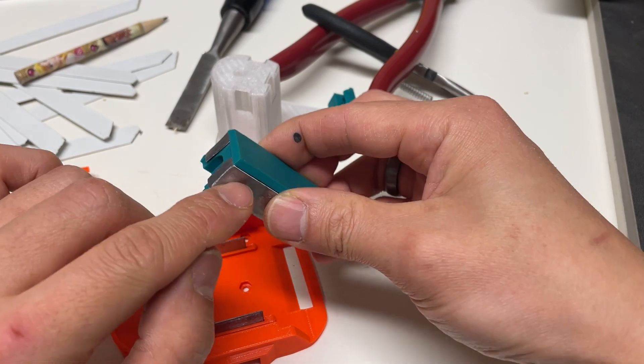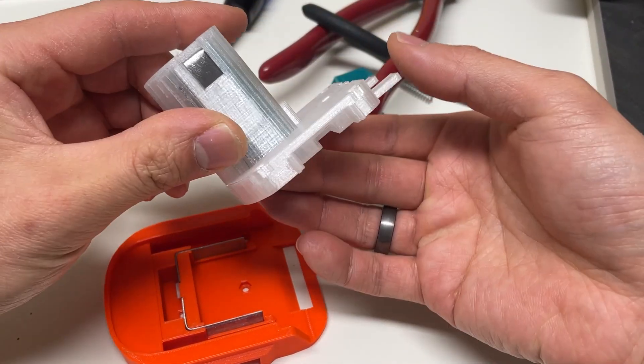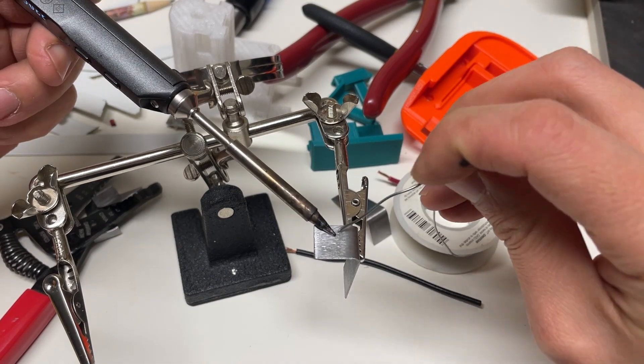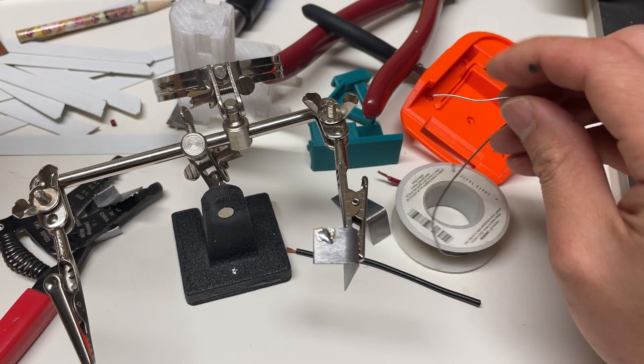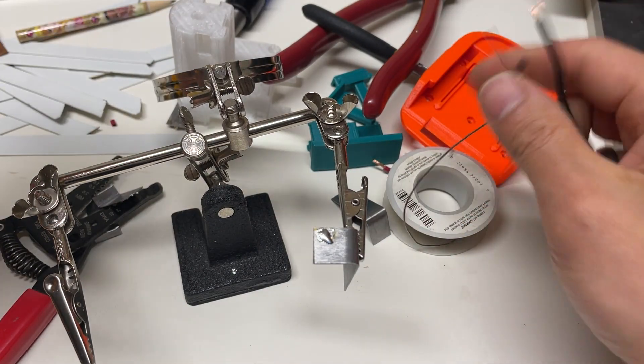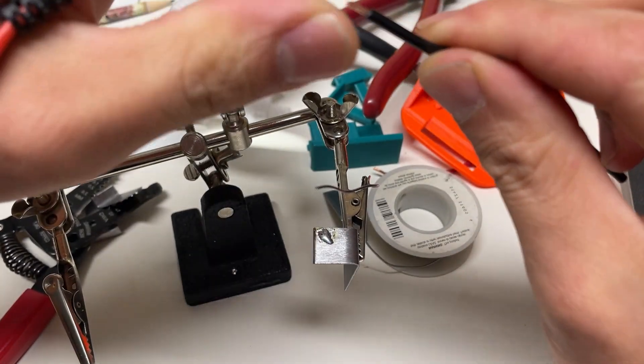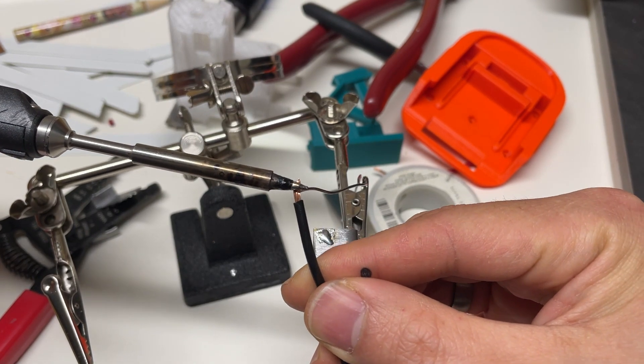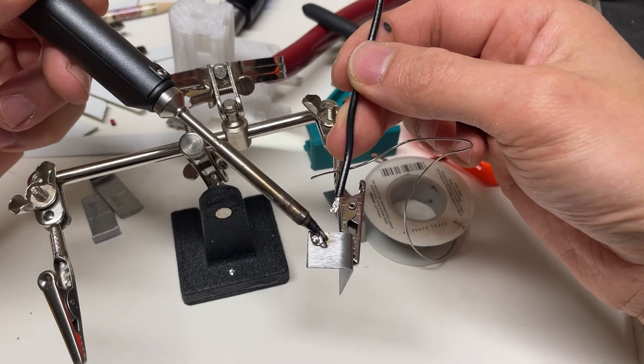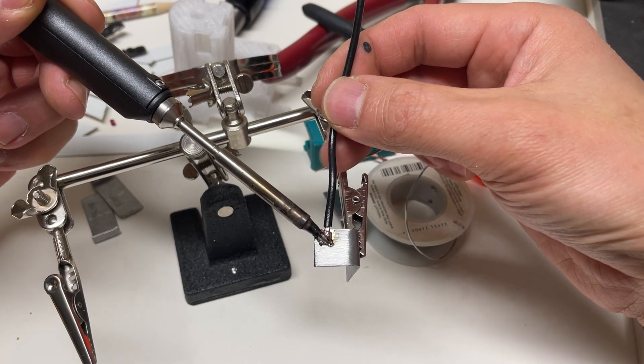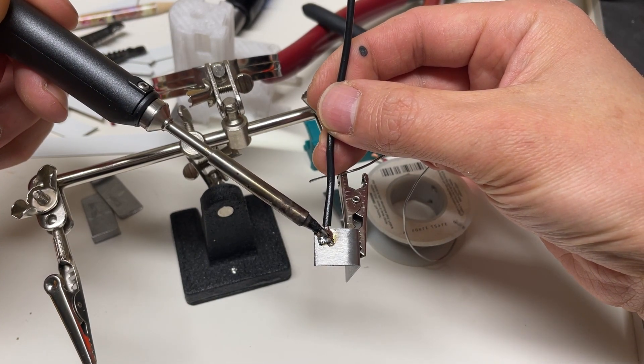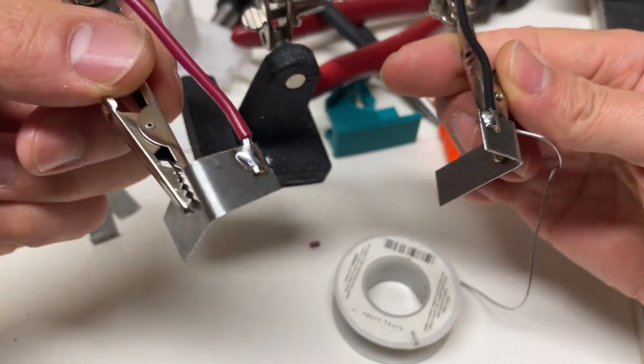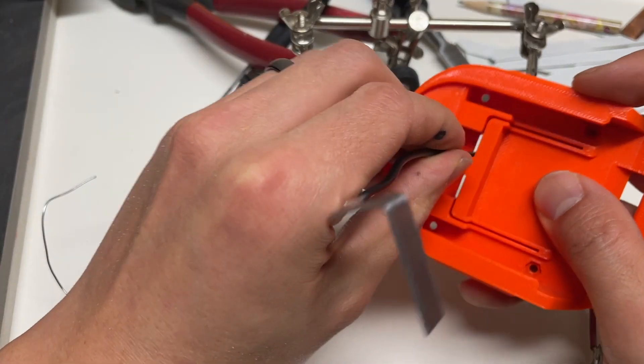And I went ahead and made the contact terminals for the Ryobi part of the adapter off-camera. And these are looking good. So now it's time to solder. So I have here about 4 inches of 16 gauge primary wire. This is stranded. I've used solid wire before but it's much easier using stranded wire. Alright and at this point this is what you want to end up with. So now these are ready to be installed.